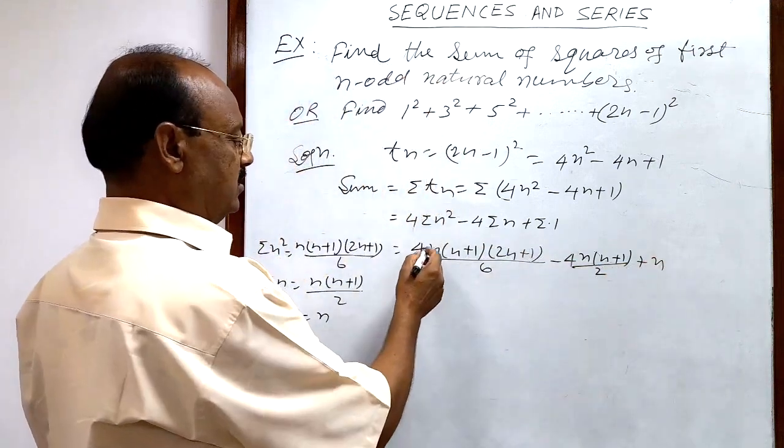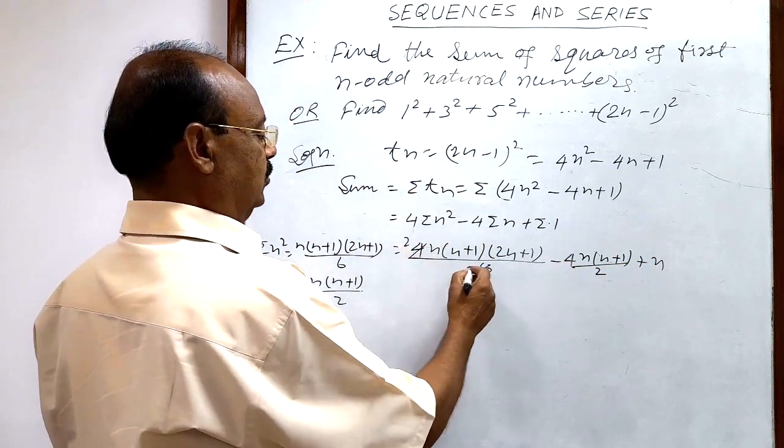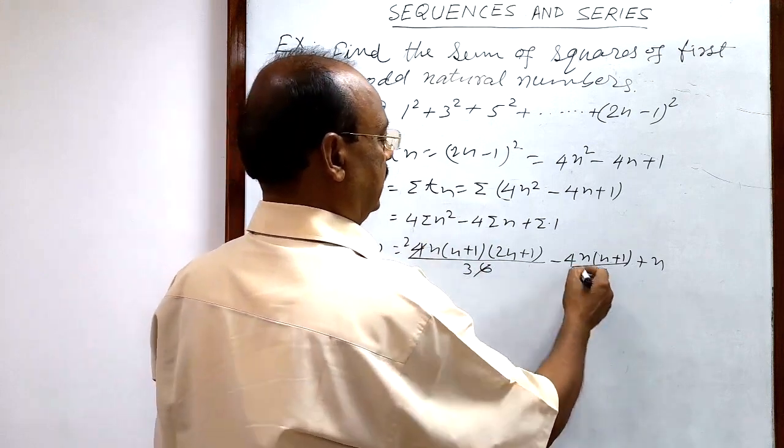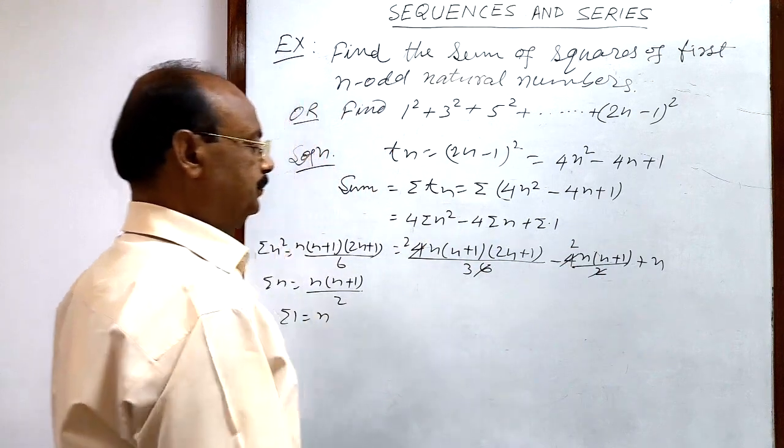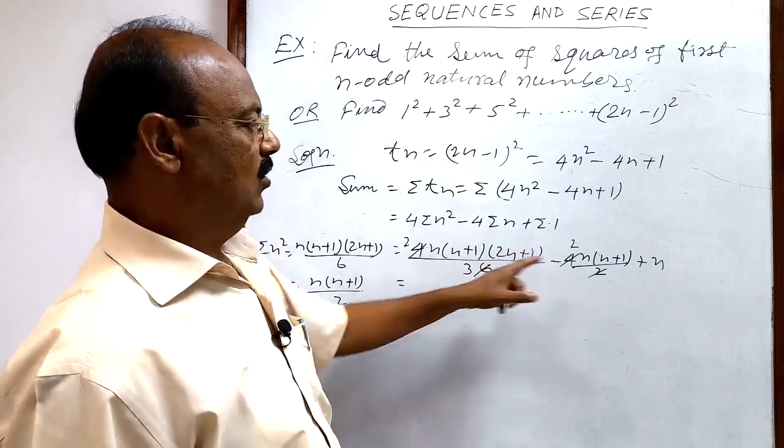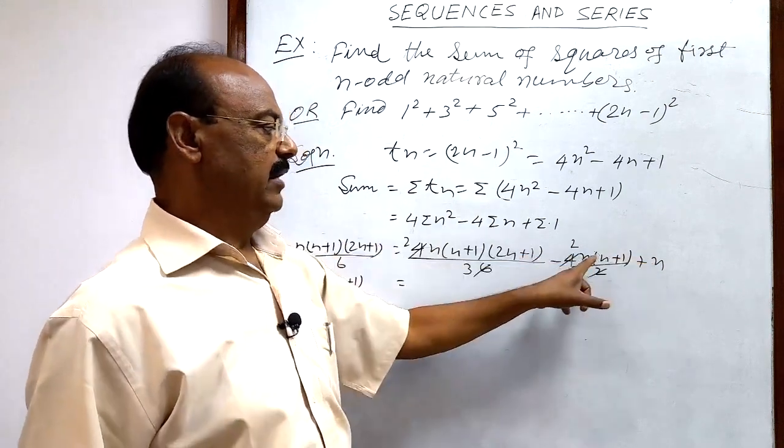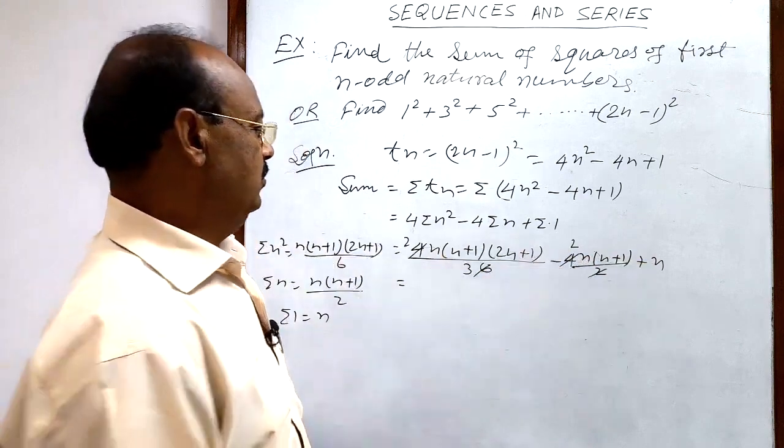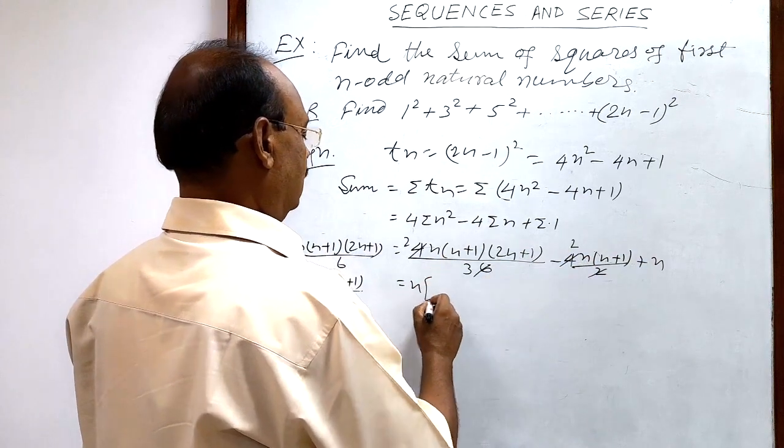This will be cancelled out here: 2, 2, 2 is 4; 2, 3 is 6; and here 2, 2 is 4. You see here we can take n common. N is available in each of these 3 terms. So n will be common here.